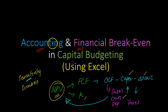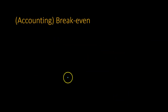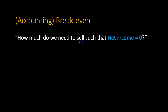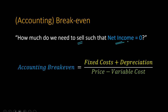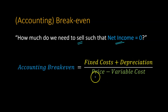The notion of break-even has two definitions. Accounting break-even asks how much we need to sell — what the sales level needs to be — such that our net income equals zero. We calculate accounting break-even by taking fixed costs plus depreciation and dividing by price minus variable cost. This number in the denominator is also known as the project's contribution margin.